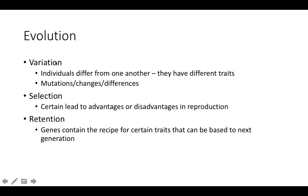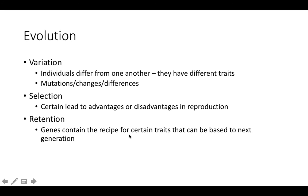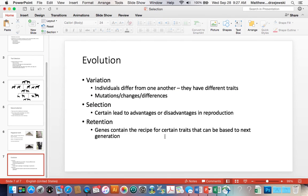We can see evolution almost within our own lifetime. Evolution involves three processes — we call them variation, selection, and retention. Variation simply means that individuals differ from one another: different hair color, eye shape, earlobes, nose hair, femur lengths. These result from individual differences and can also come from mutations, genetic errors, or problems in crossing over, meiosis, and similar processes. Some traits lead to advantages or disadvantages in reproduction, and our genes contain the recipe for those traits — that's how we retain them. We need all three components for evolution to work.